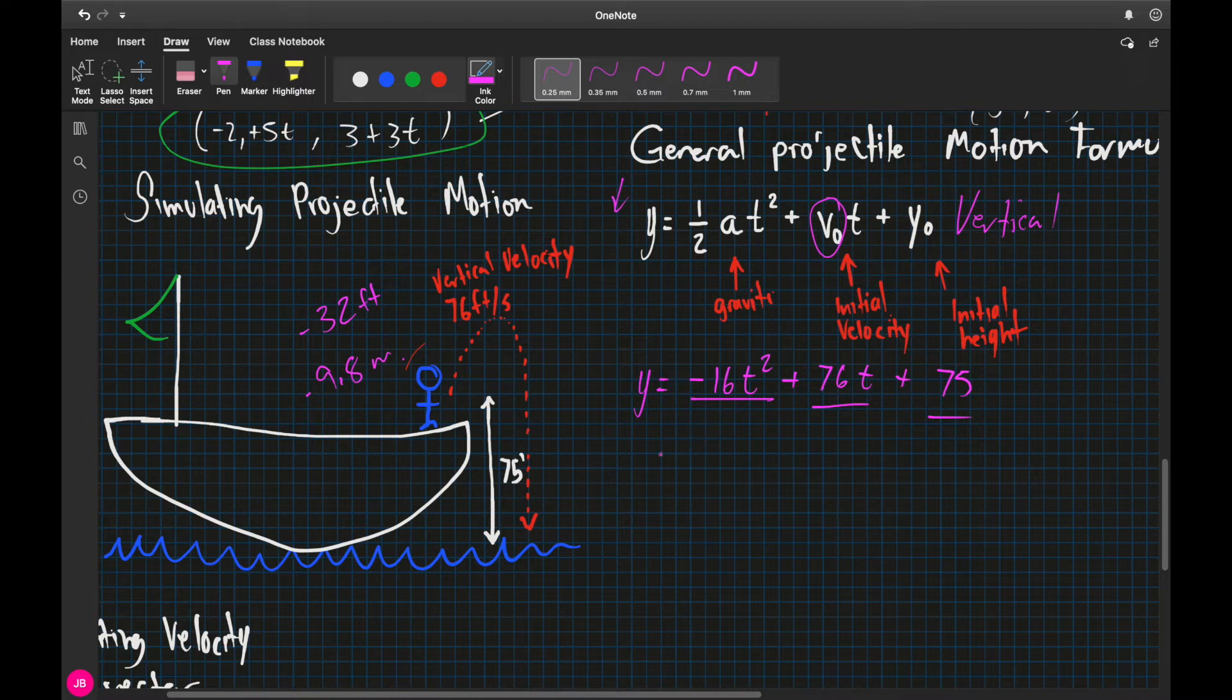This is just the vertical position. So since they didn't ask us about the horizontal position of the flare, and they didn't give us any direction about whether the flare went left and right, we can honestly assume that this flare went straight up, and then it went straight down into the ocean.